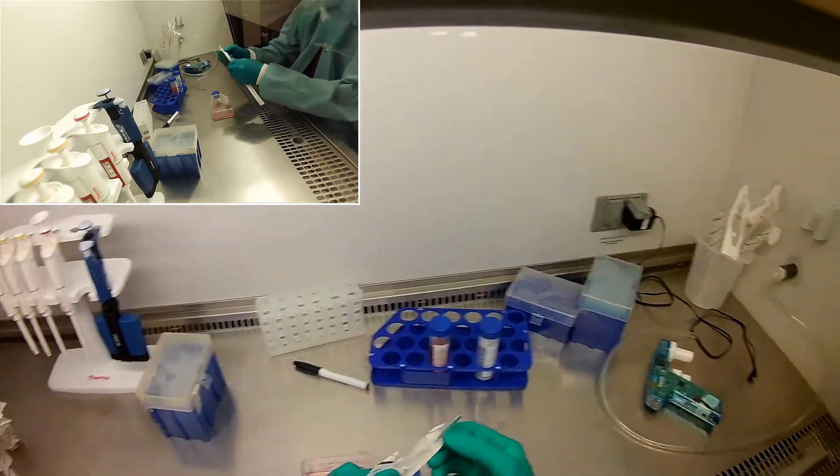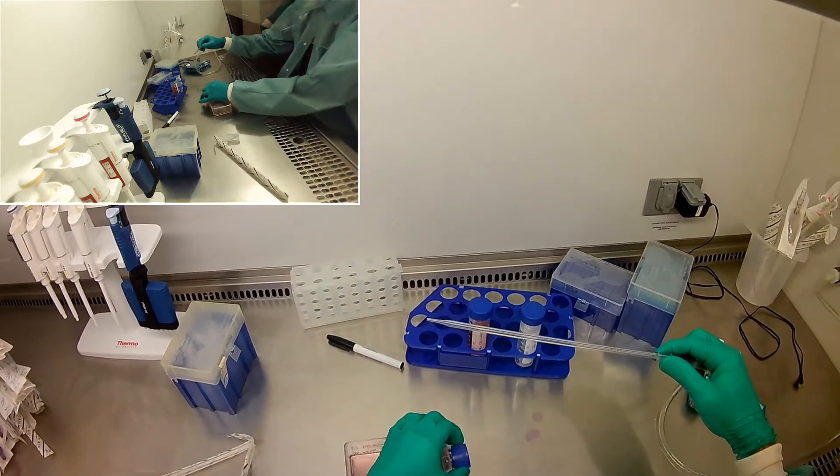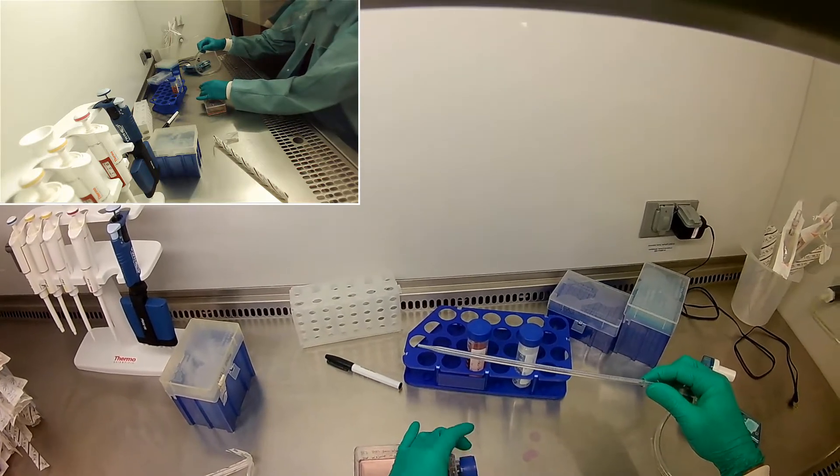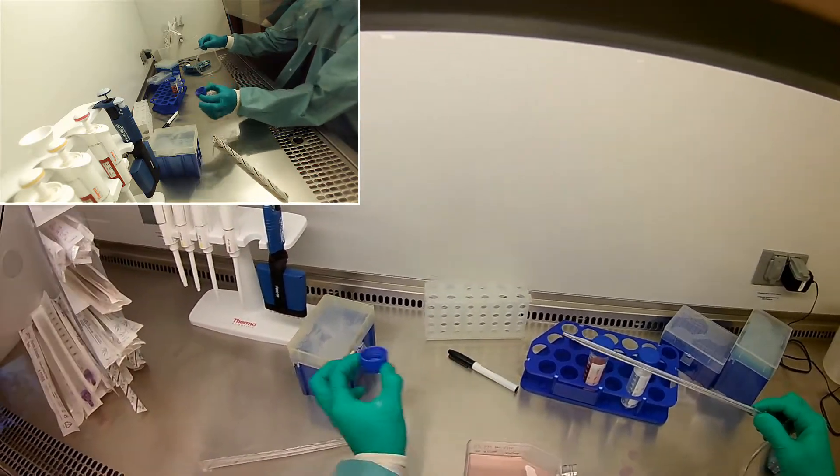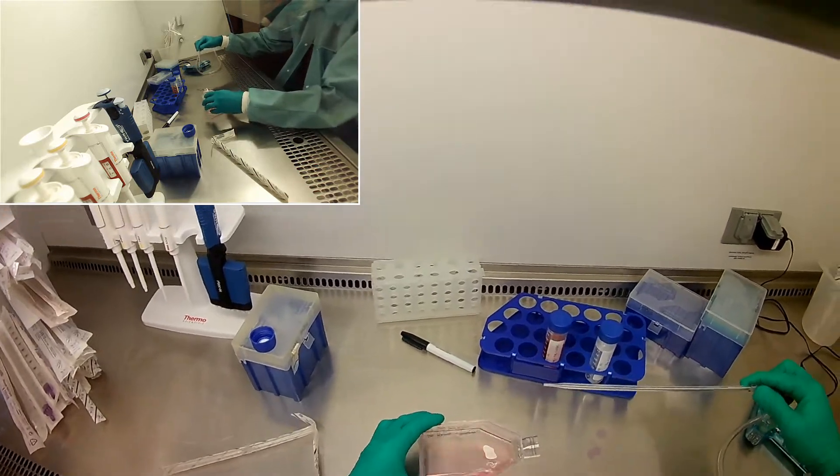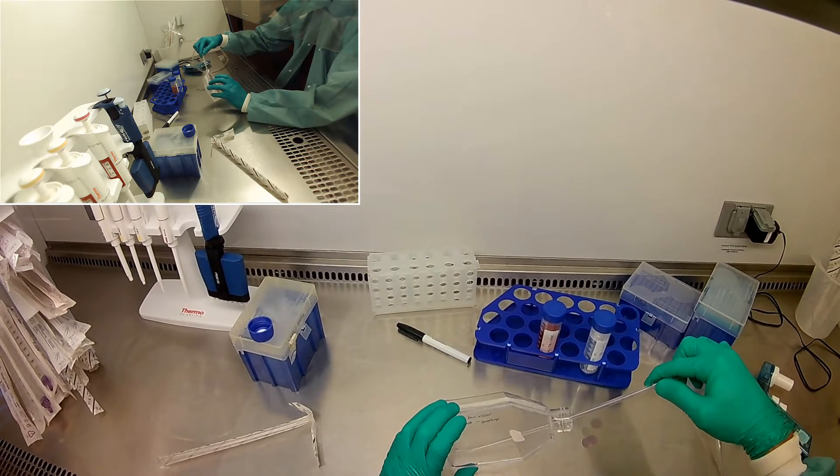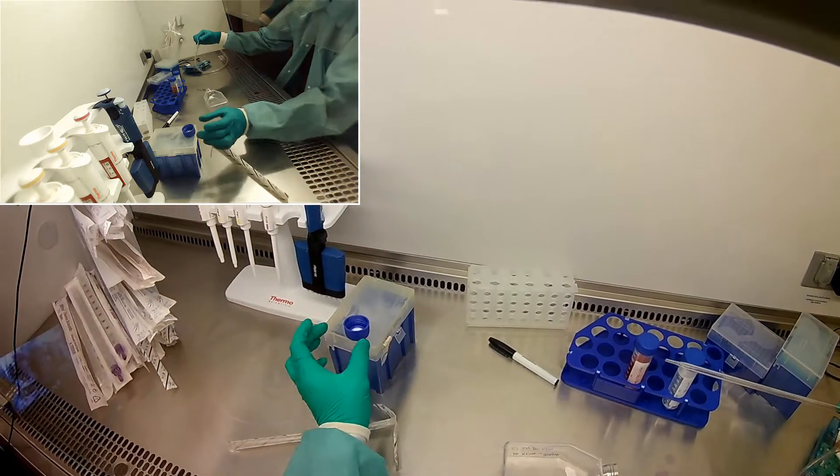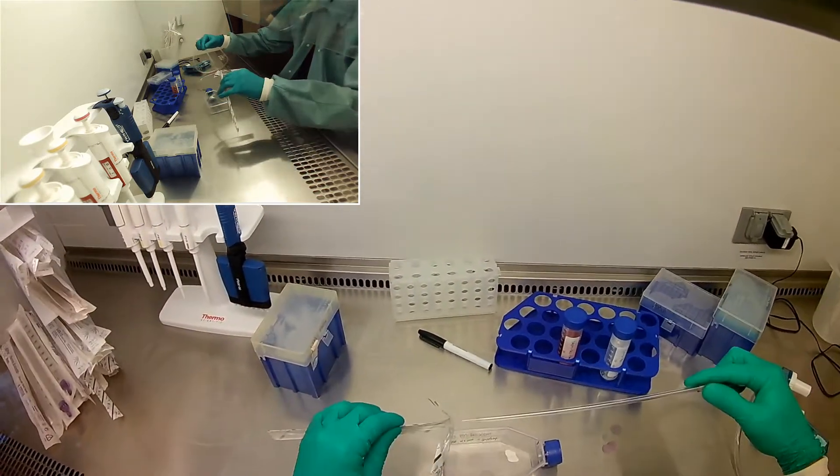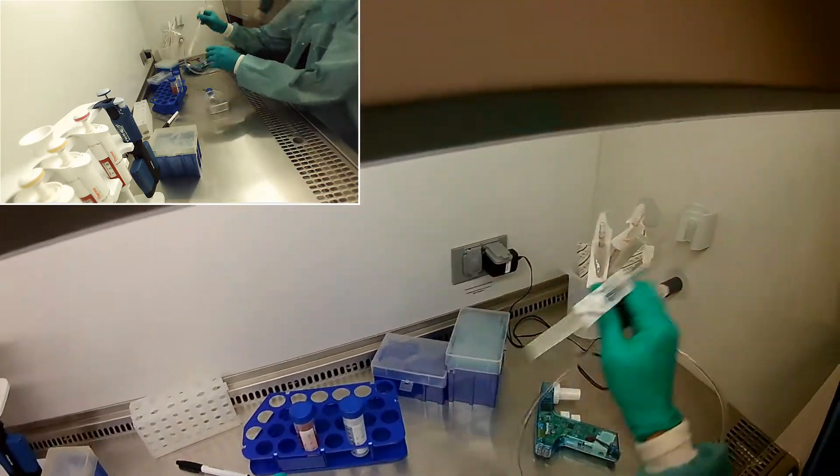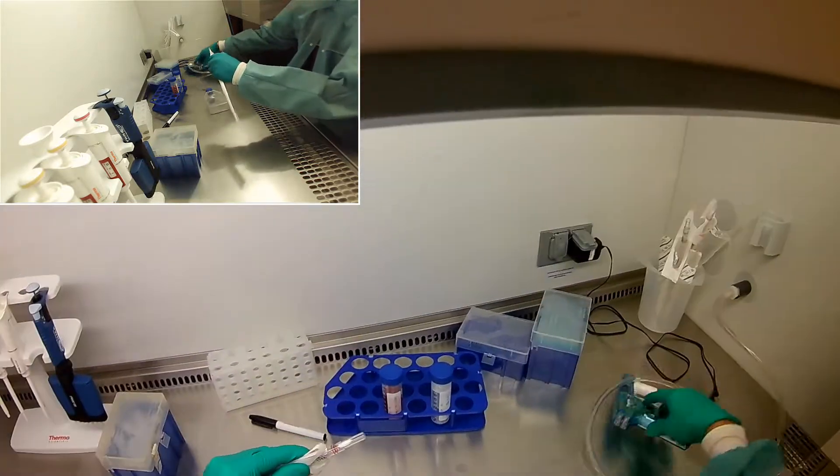So first thing I'm going to do is aspirate out the media. I'm going to be very careful with the cap, right? I don't want to put my hand over the cap or the opening. So I'm going to be very careful about flipping this over, making sure that it stays open to air. And I'll just leave it off to the side, open to the sterile air on top. All right, I'm going to suck out all that media, very careful not to go over the cap but to come from the side.